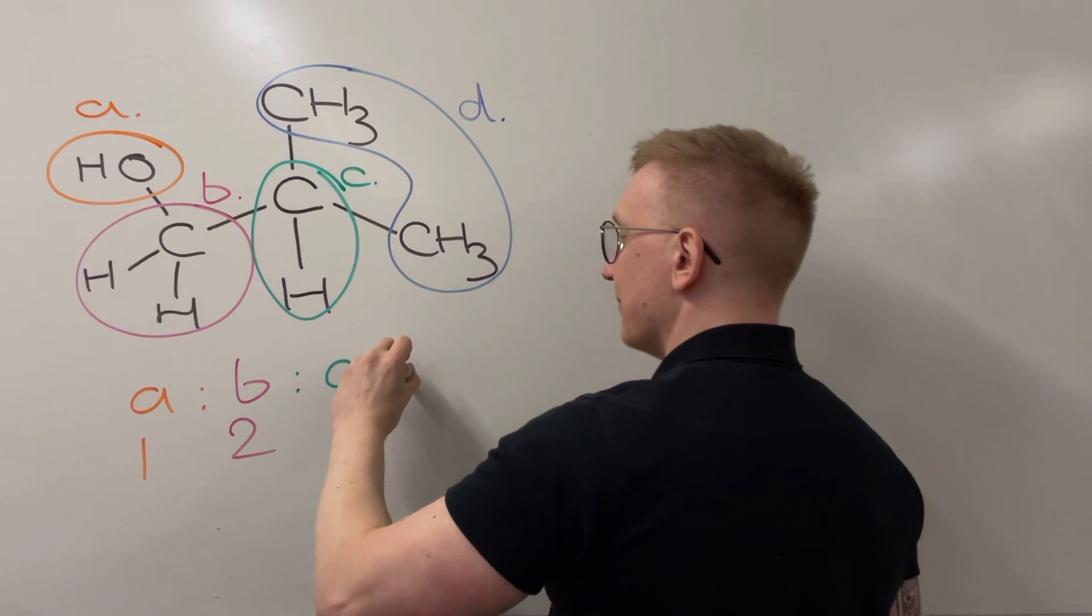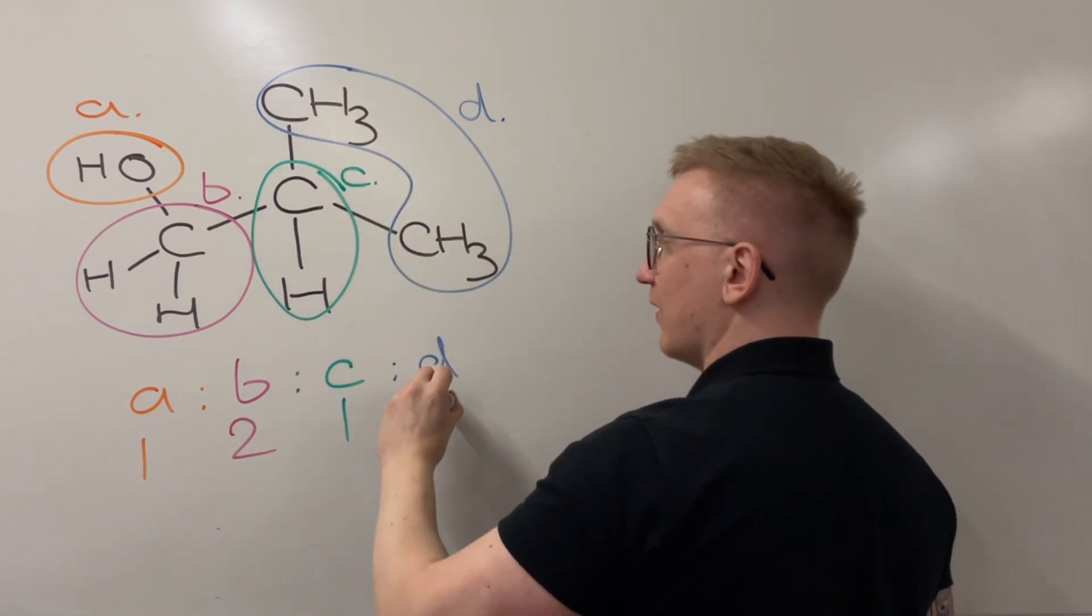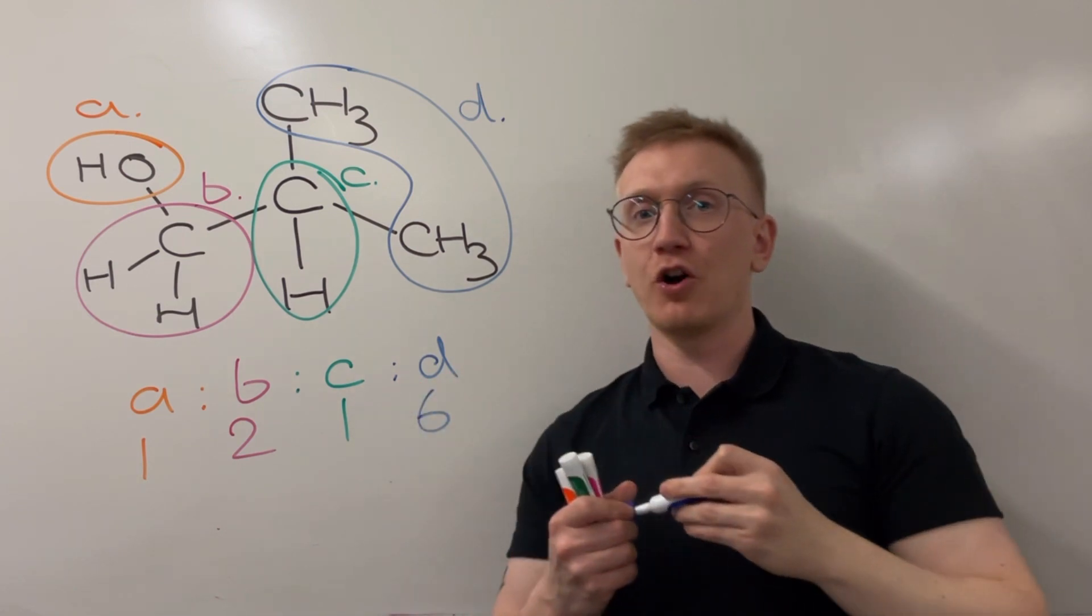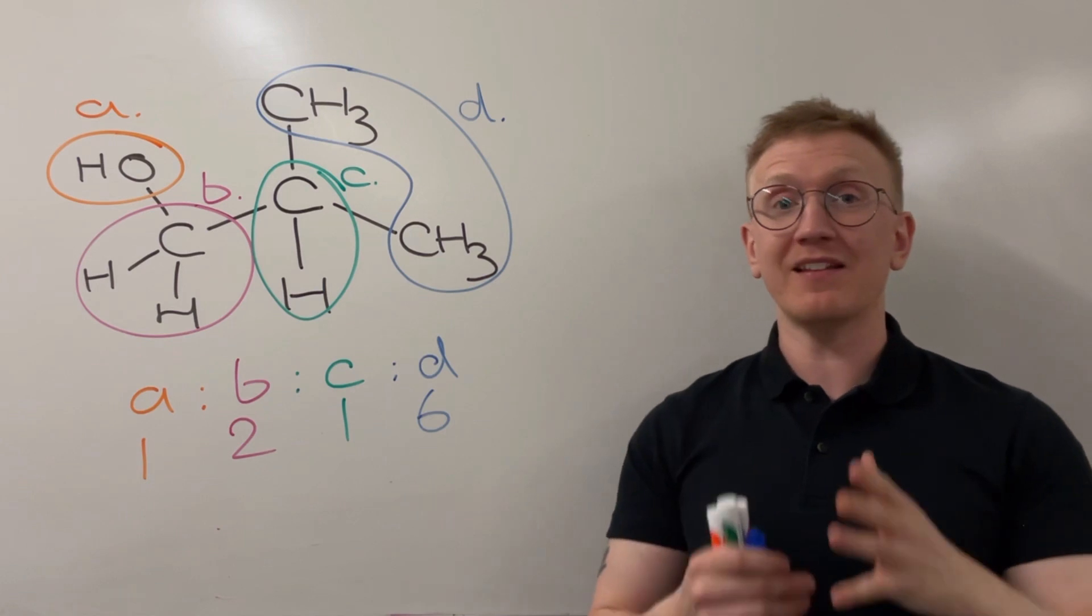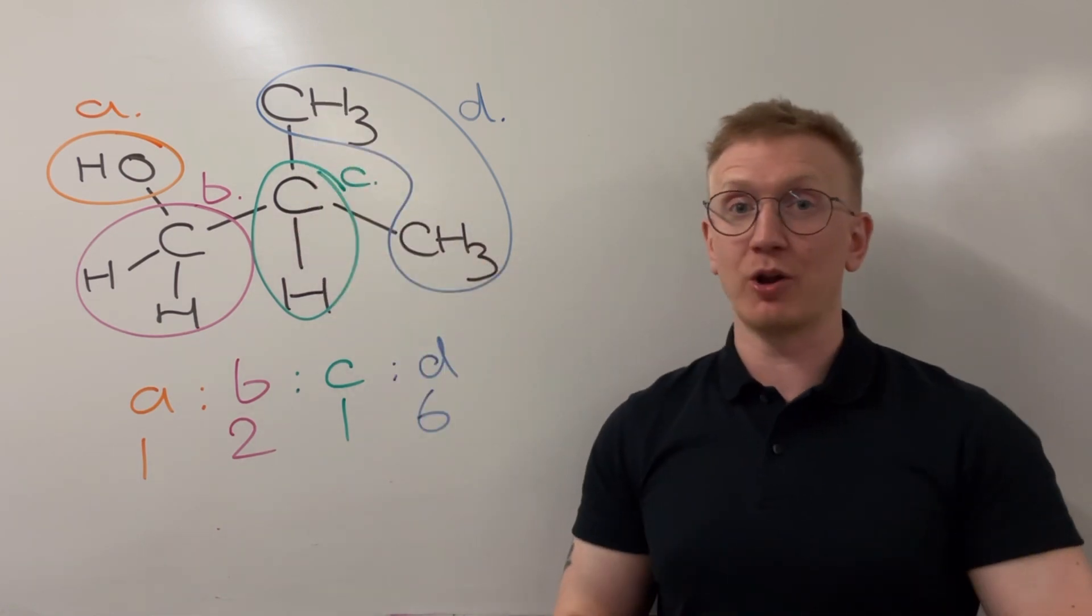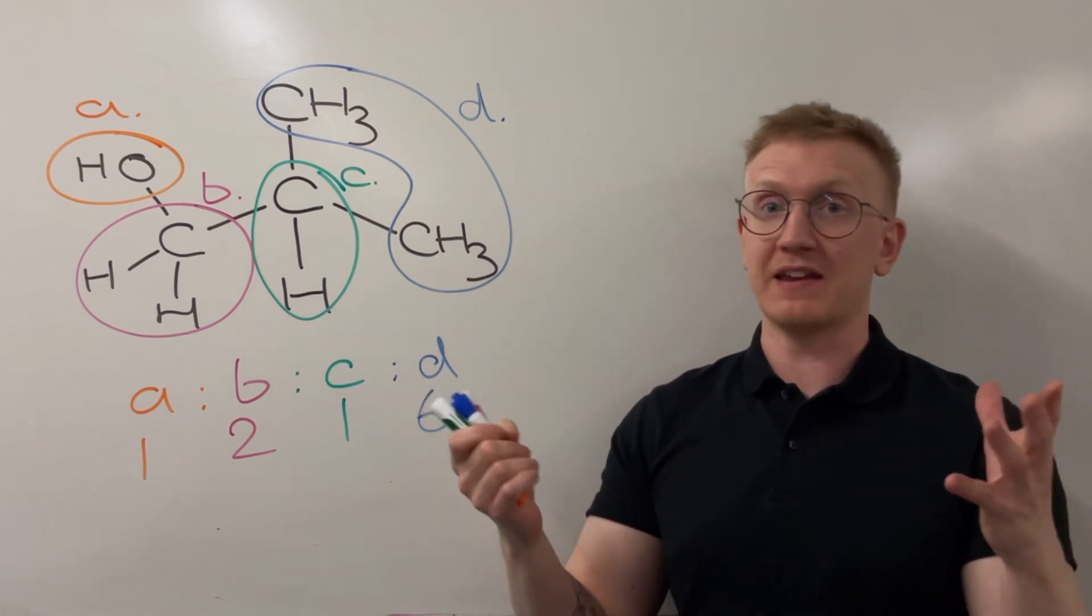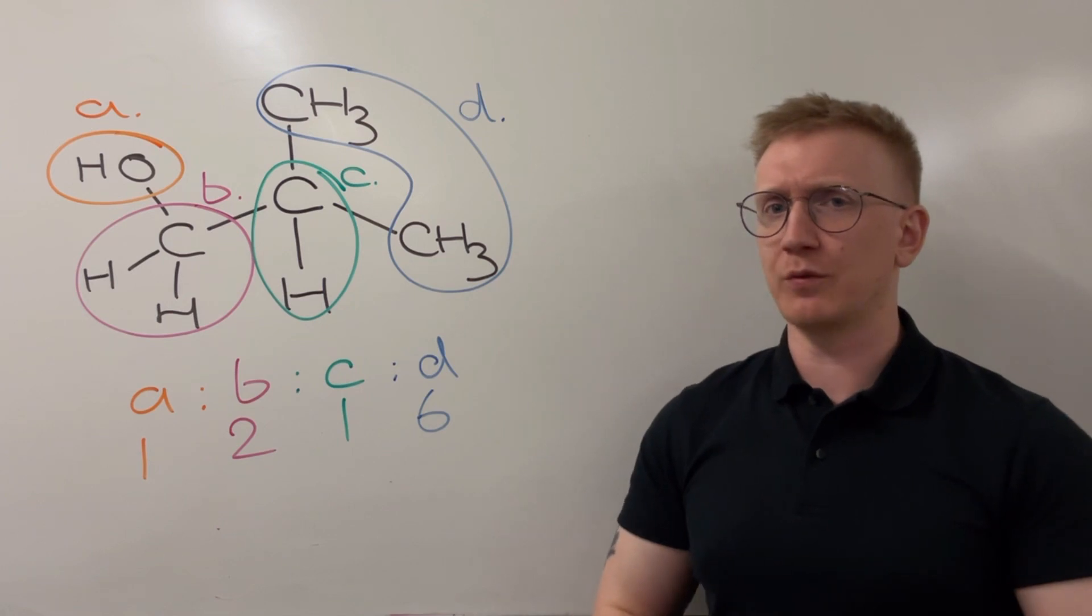That environment we'll call obviously D, and D is going to have a ratio compared to the other peaks of six, because it's got those six hydrogens across both the CH3s. The CH3s are completely equivalent because they're bonded to exactly the same section of the molecule just here. It's not just two random CH3s on a big structure; these two CH3s are absolutely identical to each other.